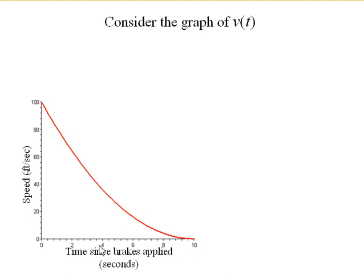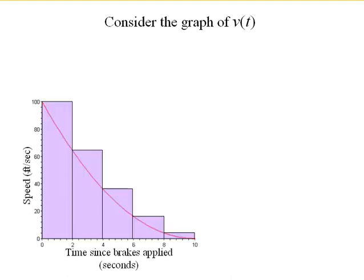Now, when we did each of those calculations, let's say our upper estimate, we did 100 feet per second times 2 seconds. Then we did 64 feet per second times 2 seconds, and so on and so forth. What that gives us, what we can represent that by, are these rectangles.